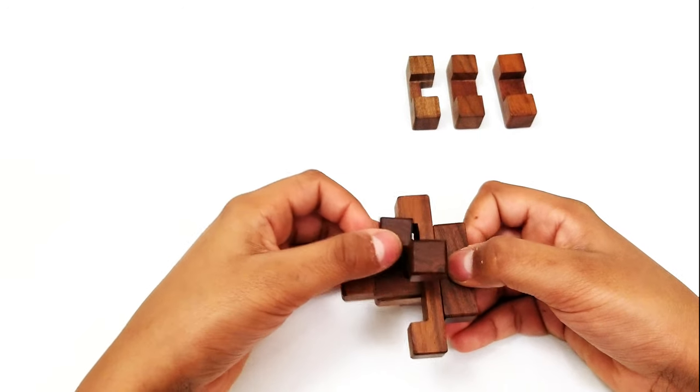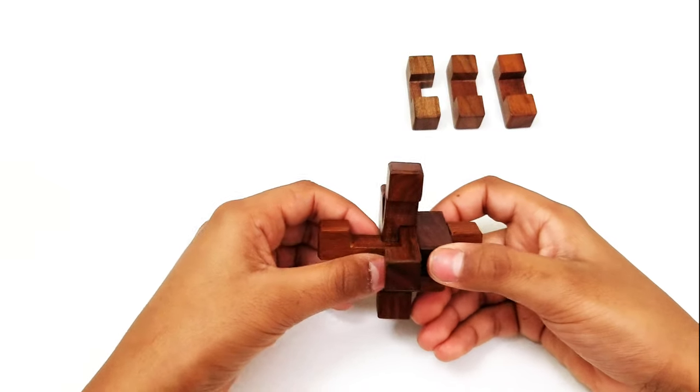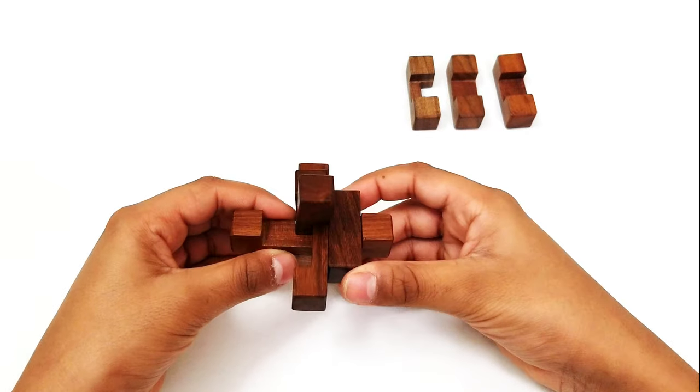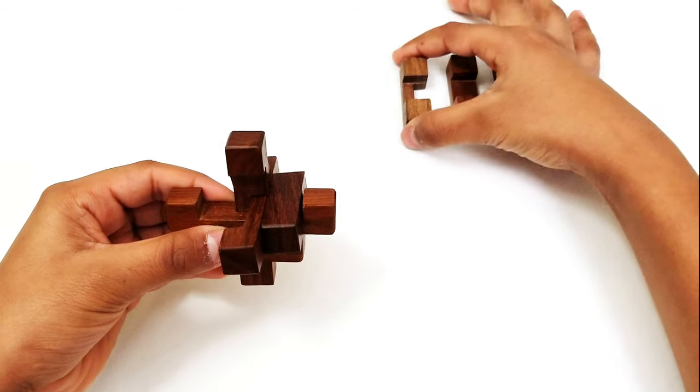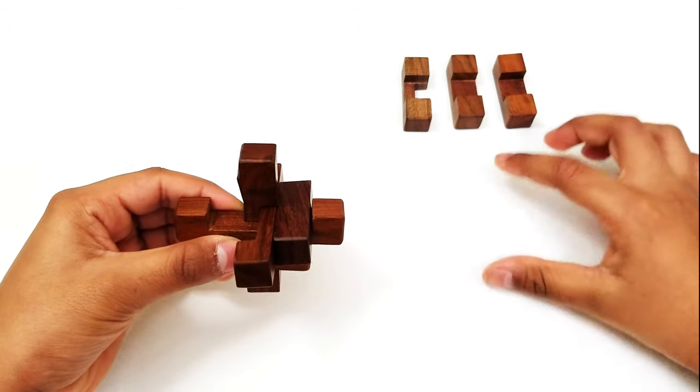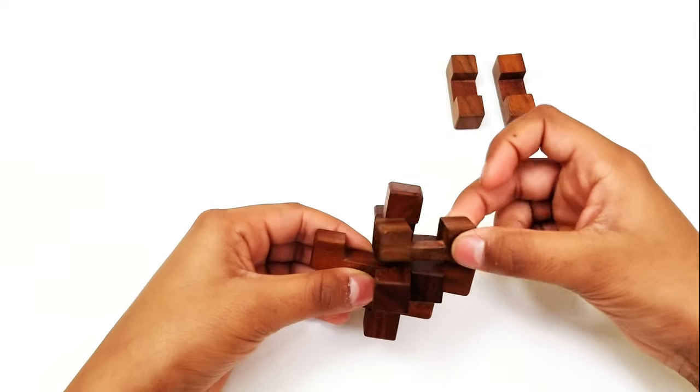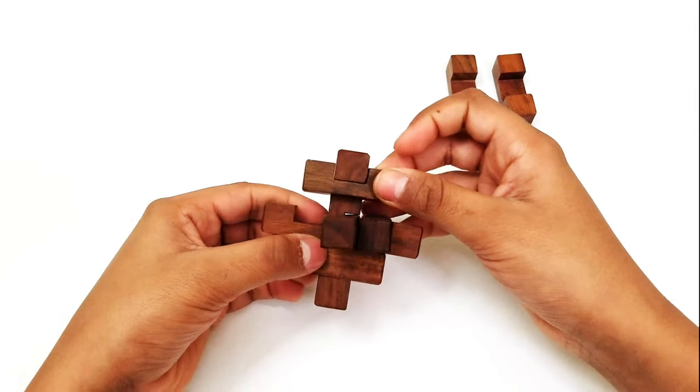Now your structure should so far look like this. You'll have three more pieces left: your log piece and two of these pieces. Take your log piece and slide it to the top. Make sure that you get a smooth surface.